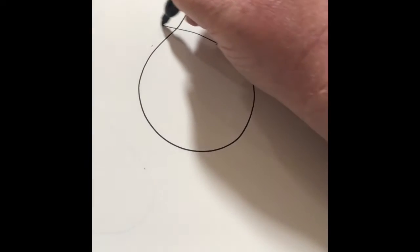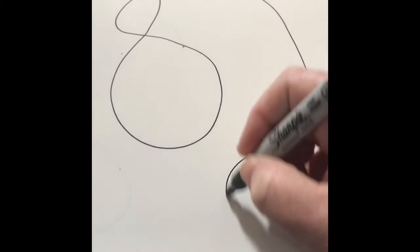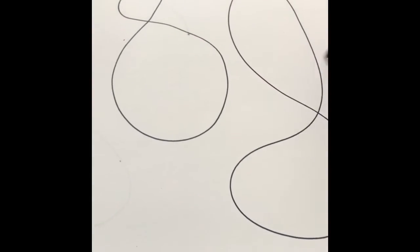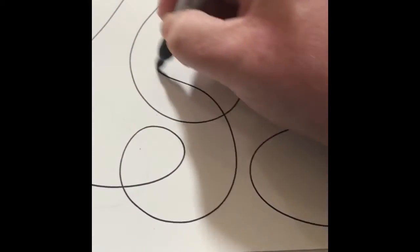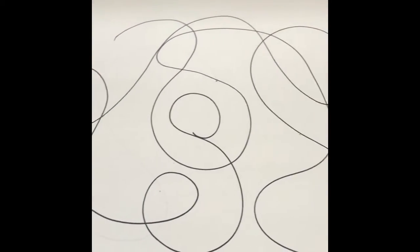Once you find the music that you want to draw to, uncap your marker or your pencil and get ready to draw. Make sure that you're drawing along with the music. Don't just scribble on your paper but use the music to inspire your lines as they loop and swirl and dance around the paper.